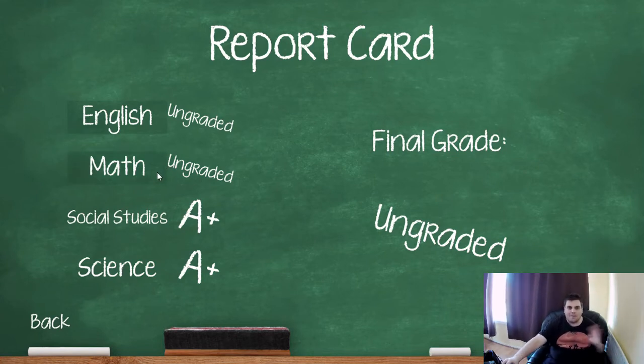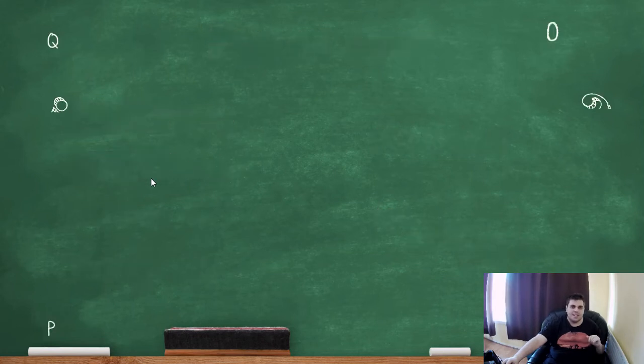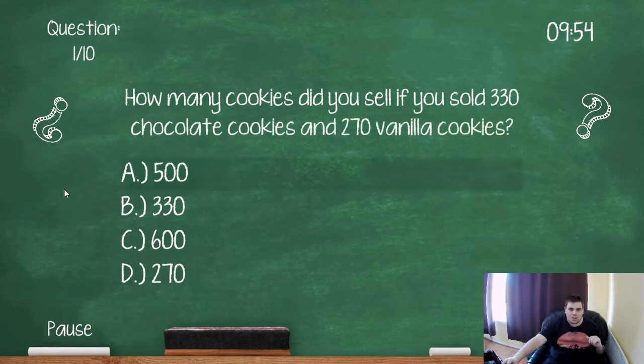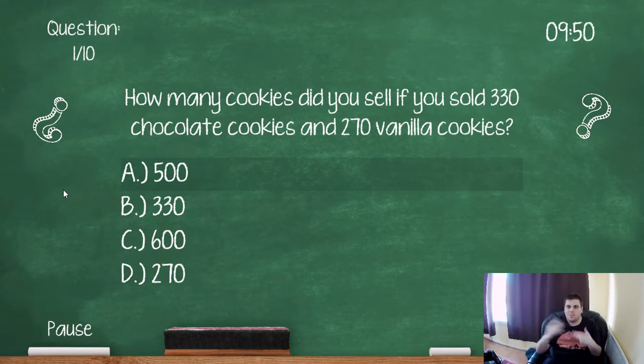Okay so let's go for maths. In the United Kingdom we call it maths or mathematics. But I'll be American and go math. How many cookies did you sell if you sold 330 chocolate cookies and 270 vanilla cookies? So 70 plus 30 is 100. You have 300, 200, 100, 600.